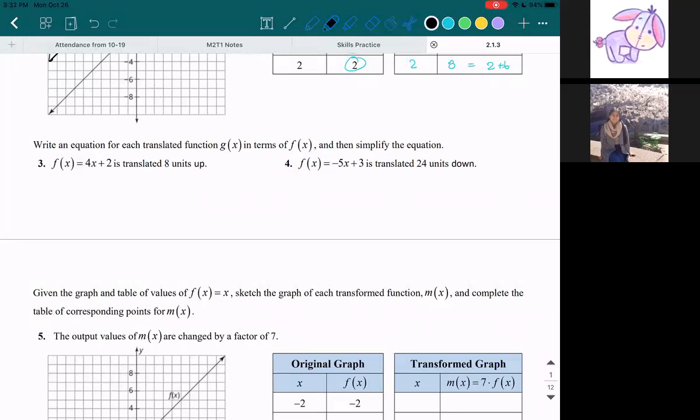So let's get started with number 3. The equation f(x) = 4x + 2 is translated 8 units up. So if you're going upwards you're going to add 8 to it. So I'm going to write g(x) = f(x) + 8.